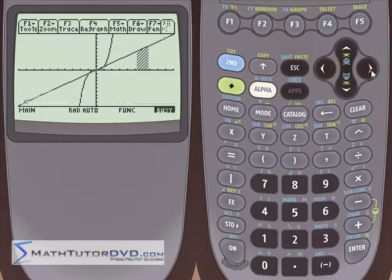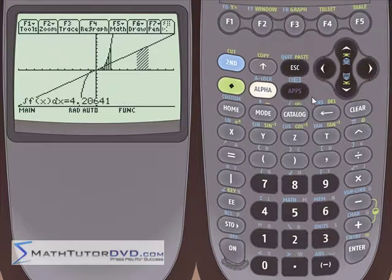Let me go ahead and select our first point here. And for the other guy, let's go ahead and pick something we can see well on the screen. So we'll hit the second point there. It'll think for a second. It'll shade under that curve and give us an area of 4.20641.